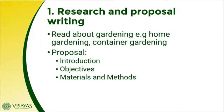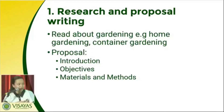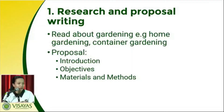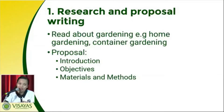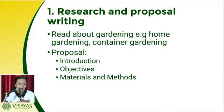A while ago, Mr. Villan already talked about proposal writing — what to do and what formats are included. For agriculture students, to have a proposal, you need to read about gardening. Examples include home gardening, container gardening, and others. You read, scan, and browse the internet so that you can conceptualize your proposal.